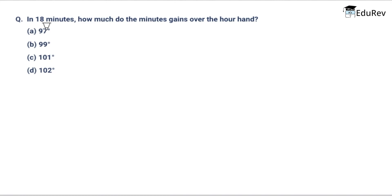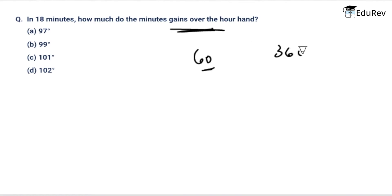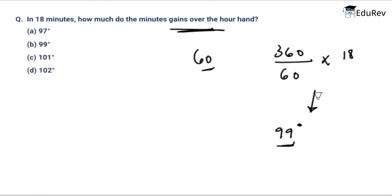The next question asks: in 18 minutes, how much does the minute hand gain over the hour hand in degrees? In one hour the minute hand gains 330 degrees over the hour hand, which equals 60 minutes. Thus in 18 minutes it gains (360/60) × 18 = 99 degrees. The correct answer is option B, 99 degrees.